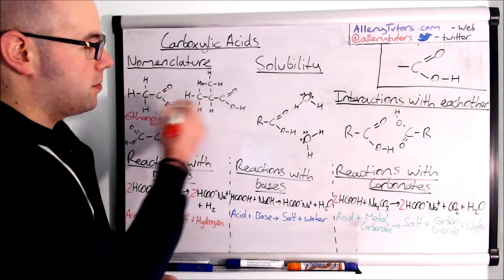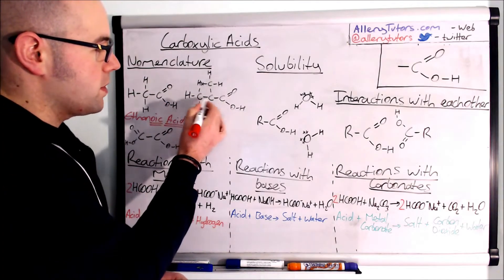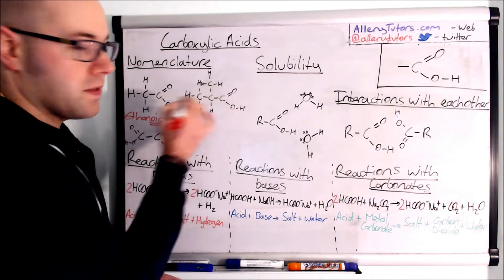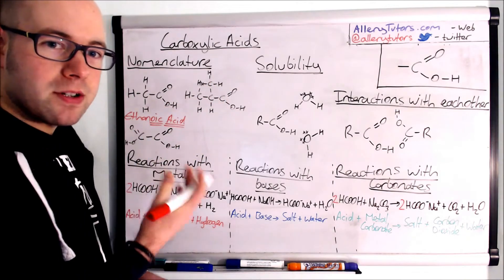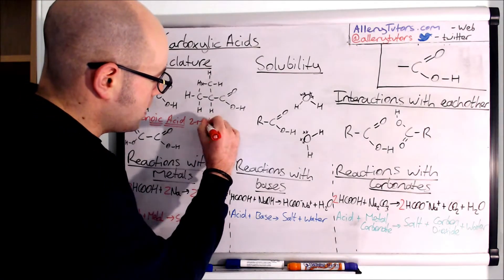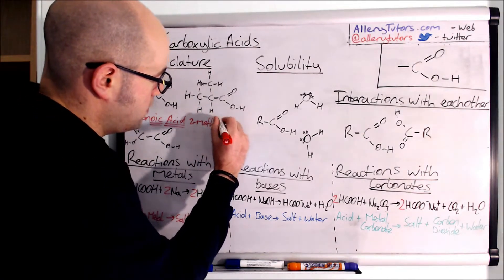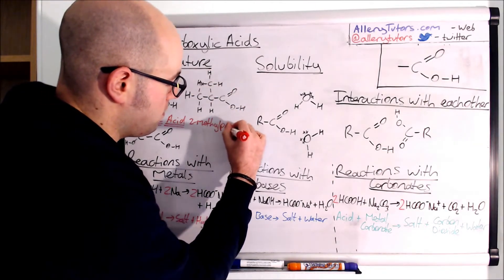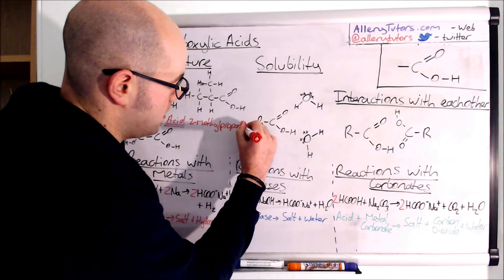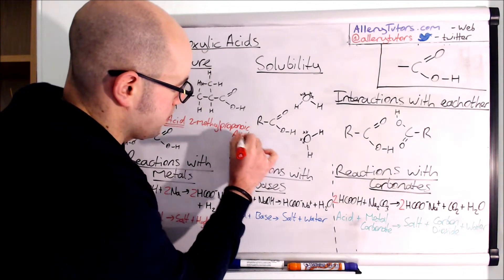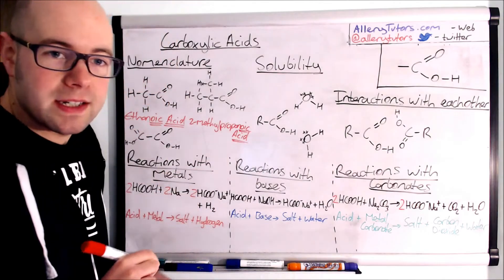Okay so the next one is a little bit more tricky. We've got the prop group here because we've got three carbons and then we've got a methyl group hanging off the second carbon. So we name it just like a normal alkane really. This is going to be 2-methyl because we've got a methyl group hanging on there and that's going to be propanoic acid. Again, we've ended it with oic acid as well.